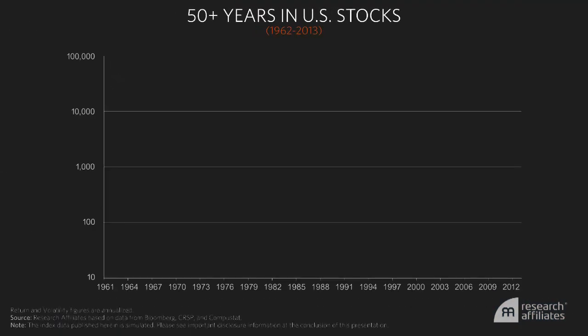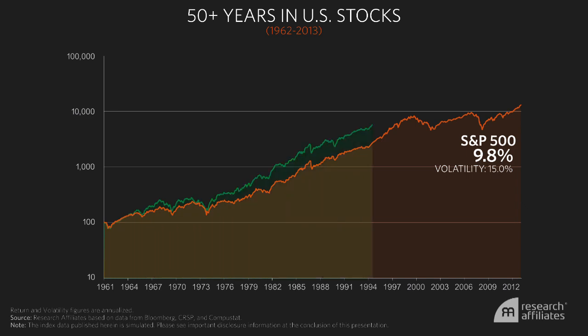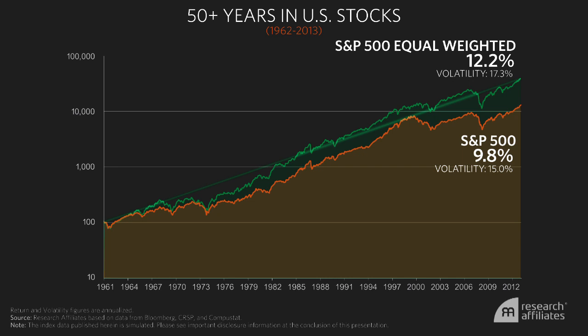Over the last 50 years, the return of the capitalization-weighted S&P 500 has been about 10%. But the return of the equal-weighted S&P 500 has been about 12% — a 2% return advantage for the equal-weighted index.